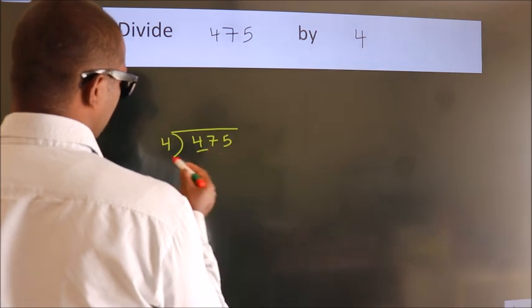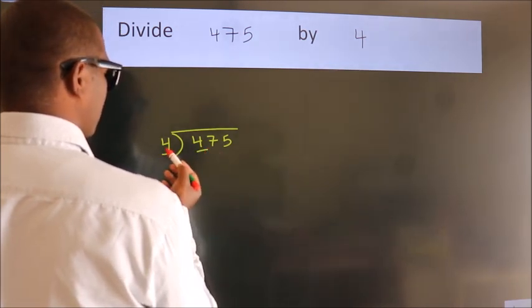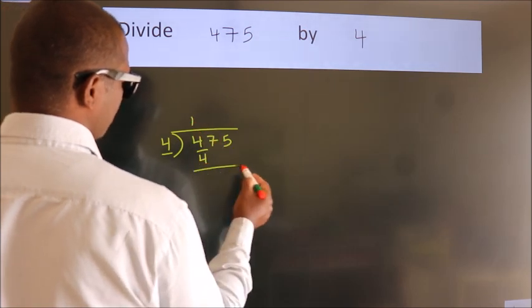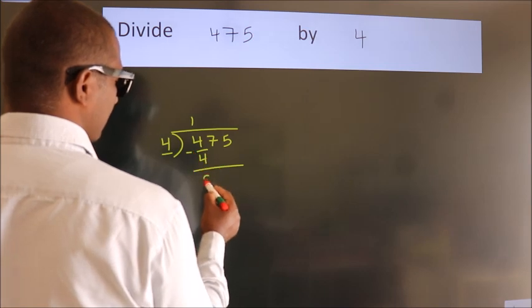Here we have 4, here 4. When do we get 4? In 4 table. 4 once, 4. Now we should subtract, we get 0.